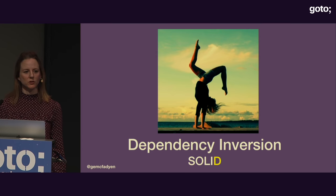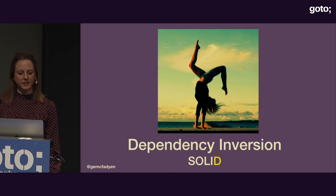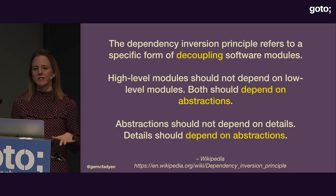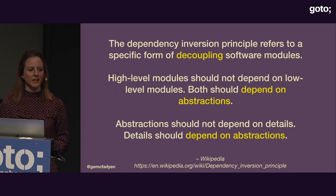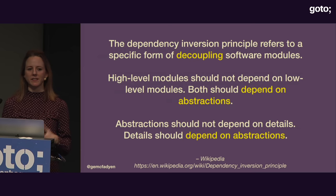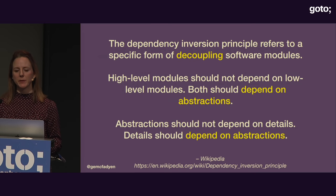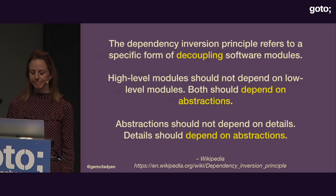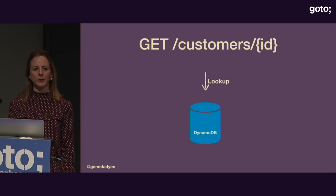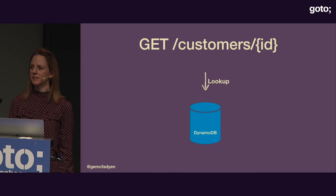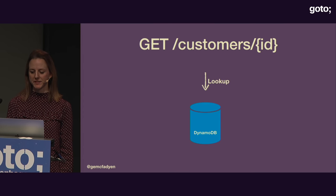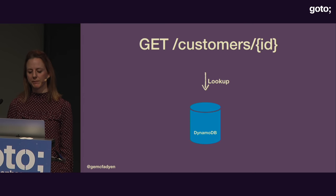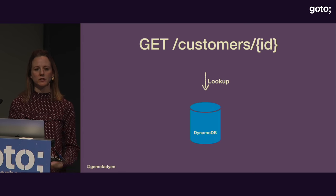That brings us to our last SOLID principle: Dependency Inversion. It's about keeping your high-level layers separated from your low-level layers. We have a GET endpoint that fetches user search preferences and connects to DynamoDB — an external system. We use a library to help us interact with the database, and it expects there to be a running database in place — either a DynamoDB instance in AWS or a locally running one configured to look on localhost.